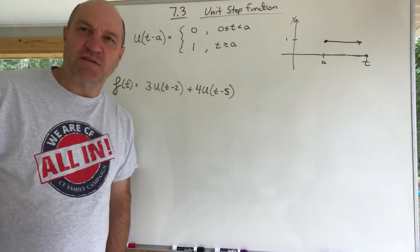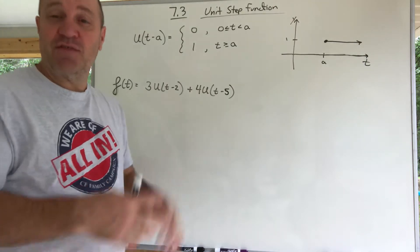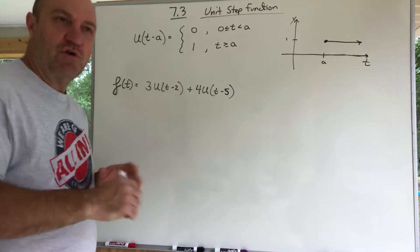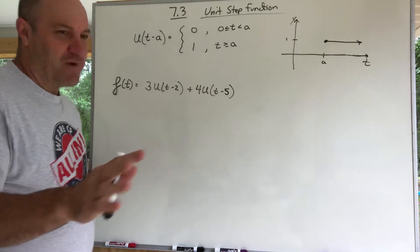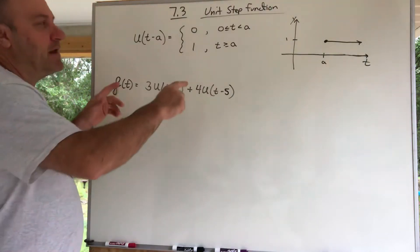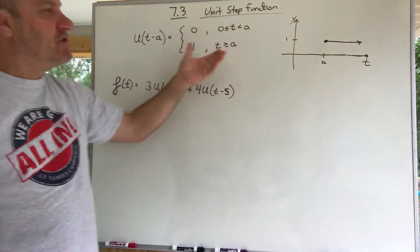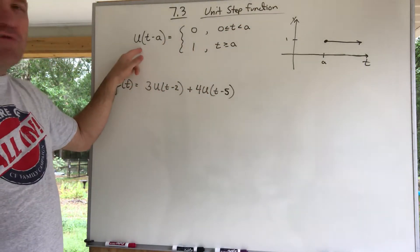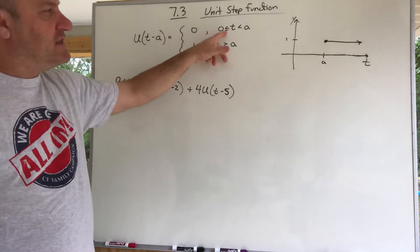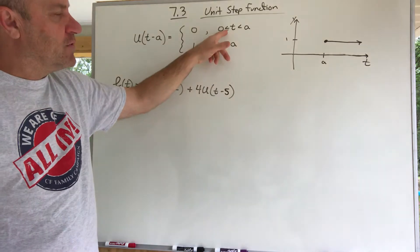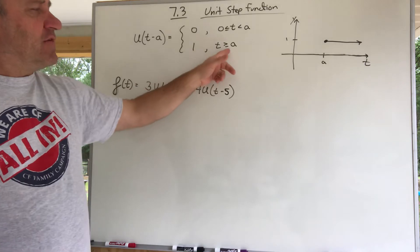Good morning, differential equations. We're still in section 7.3, and this is a big new topic. It's the unit step function, written as u(t - a). Here's what it equals: it's zero when t is less than a, but it's one when t is greater than or equal to a.